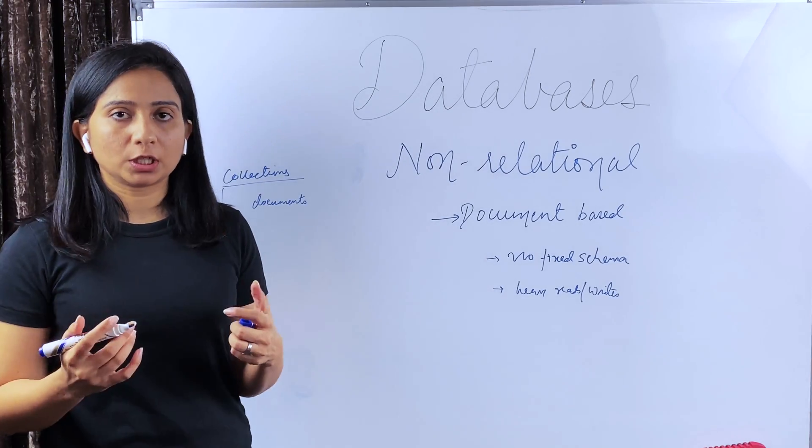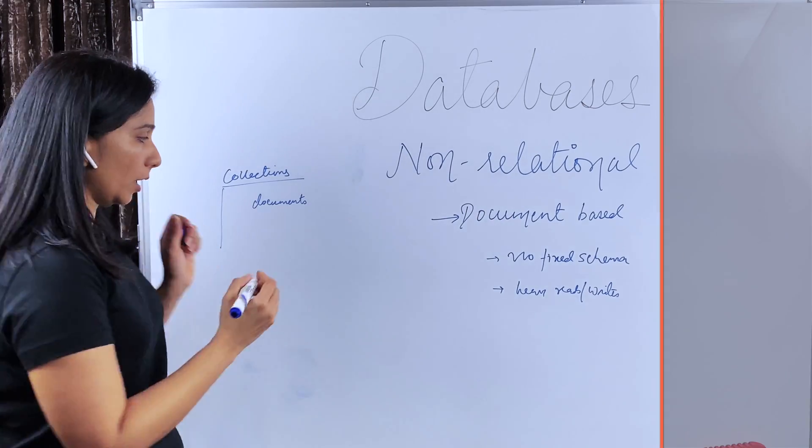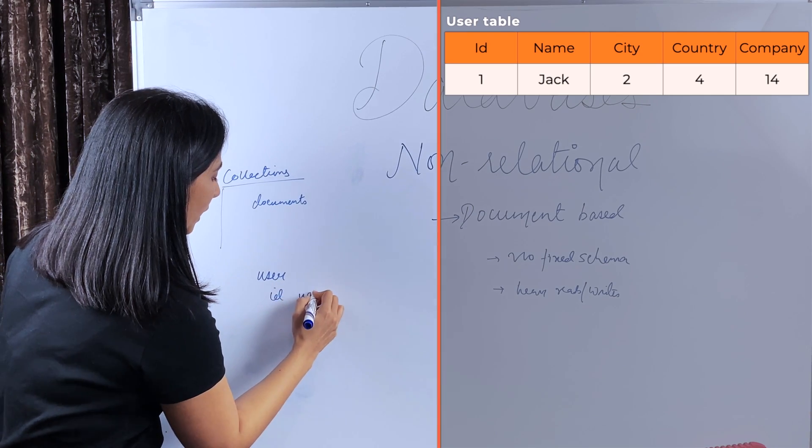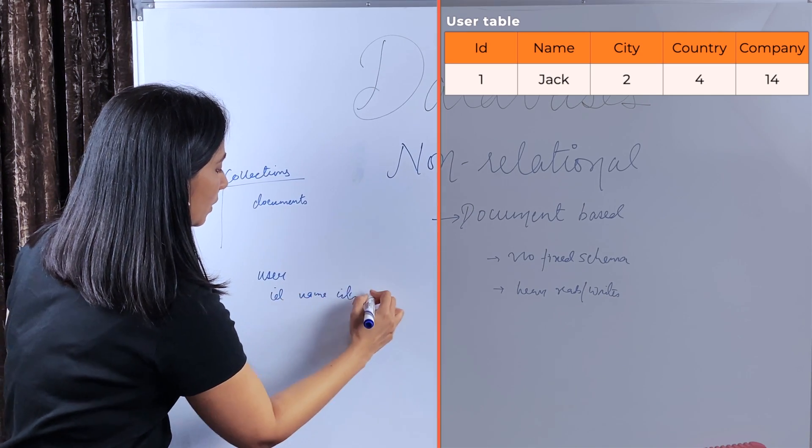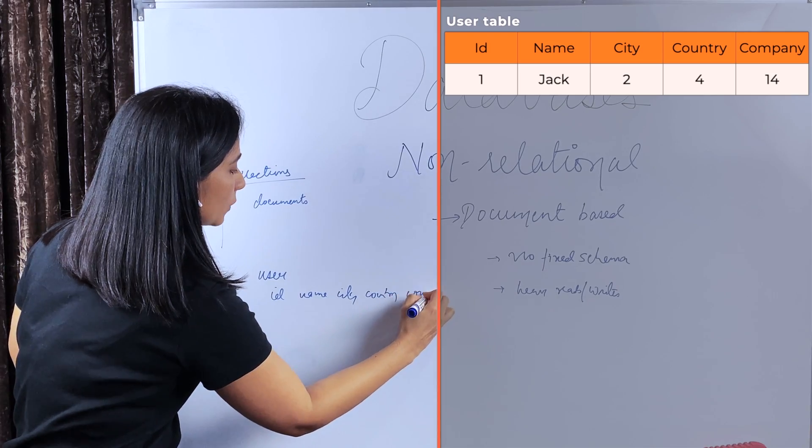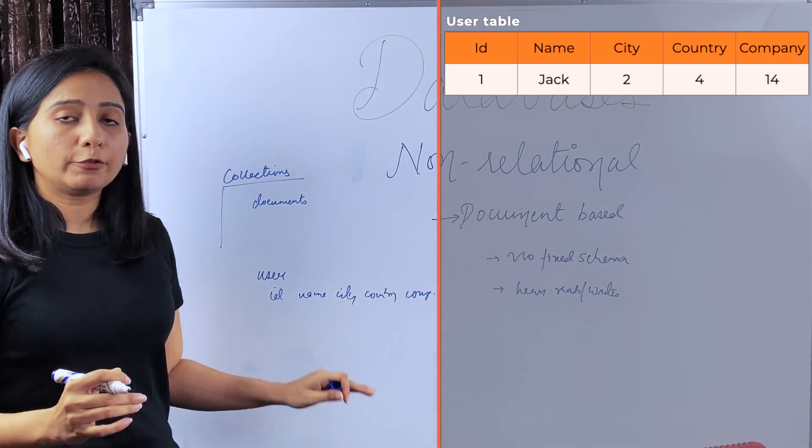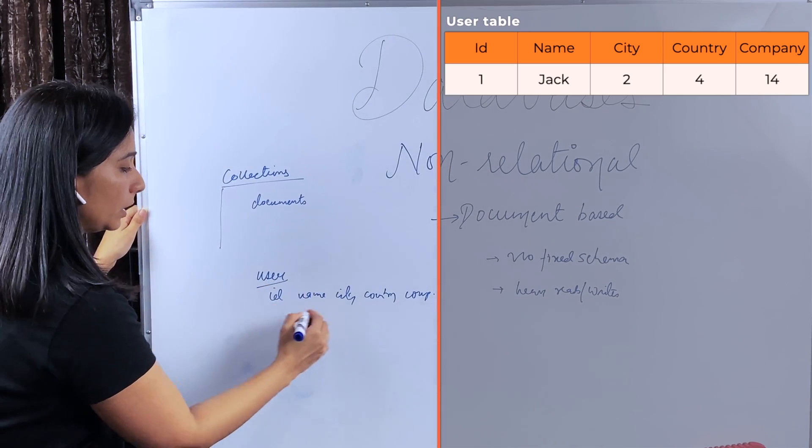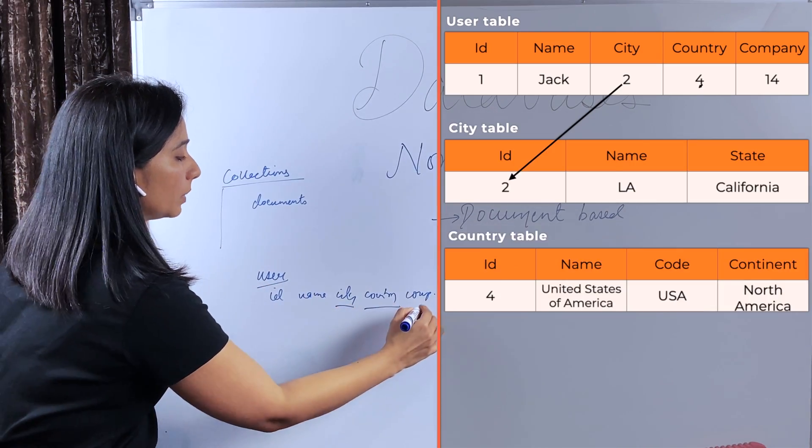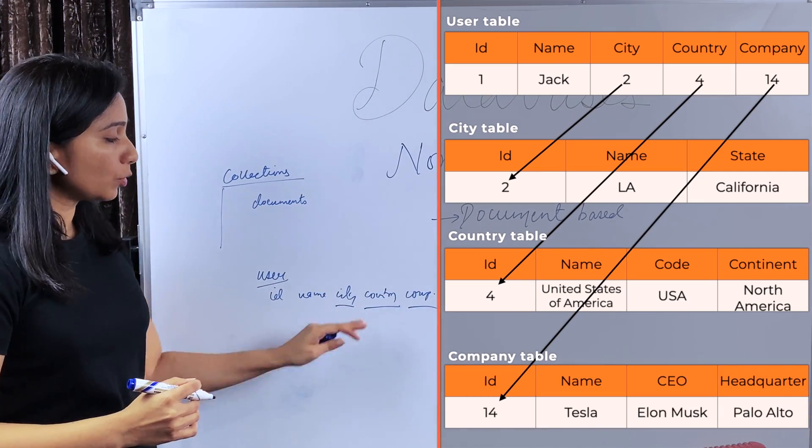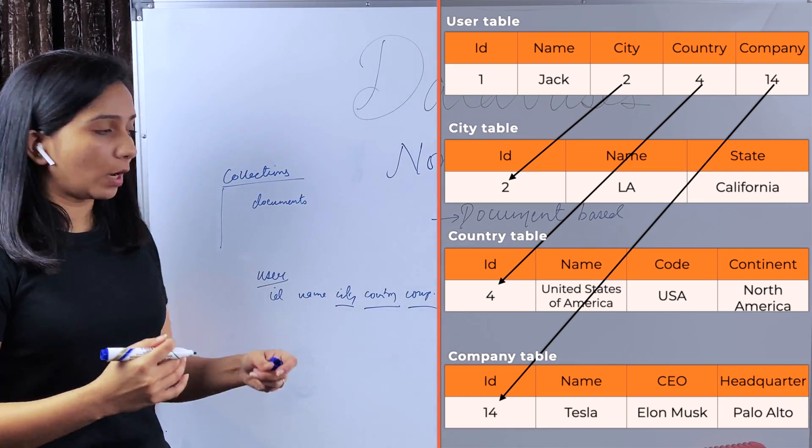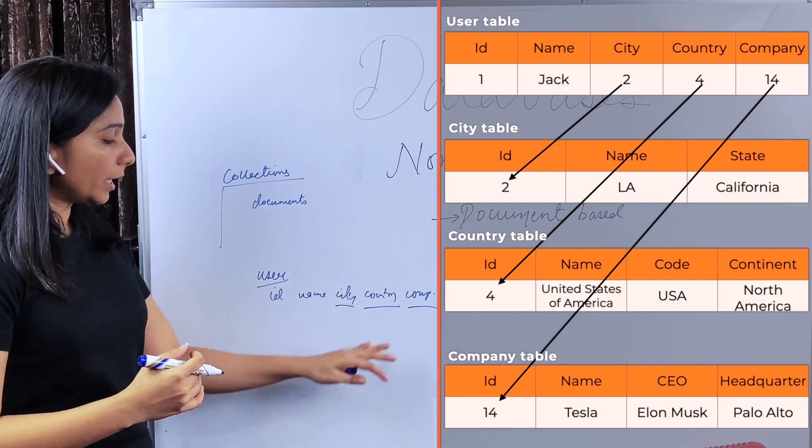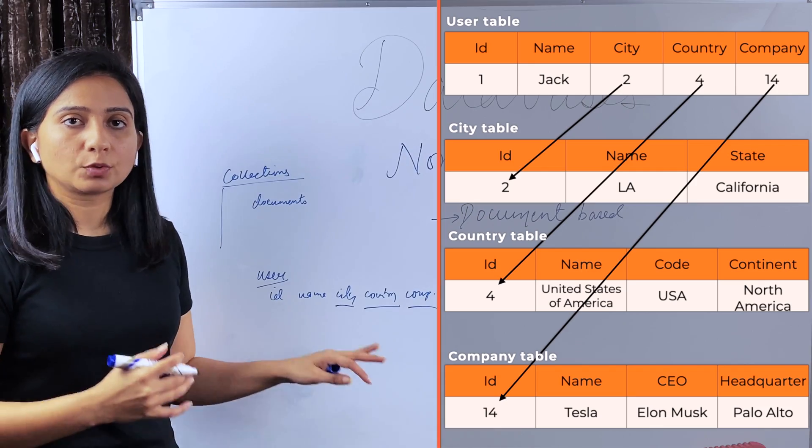Suppose you have a relational DB where you store user-related data. So you would have a user table where you have user ID, name, city, country, the company he works for, etc. If you have to fetch all the user details, you would have to make query to user table, then city table, country table, and company table to fetch the details related to city, country and company. And also you have a requirement of saving a large amount of user data. So this kind of case becomes complicated while using relational DBs.